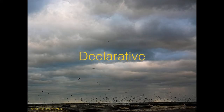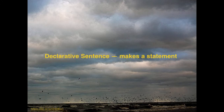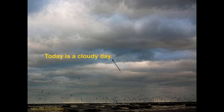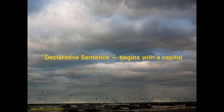Let's begin with the declarative sentence. Declarative sentences make a statement about something. "Today is a cloudy day" is a statement about the clouds in the sky. All sentences, including the declarative sentence, end with some sort of punctuation mark. The declarative ends with a period. In addition, all sentences begin with a capital letter — so here, it's a capital T in the word "today."